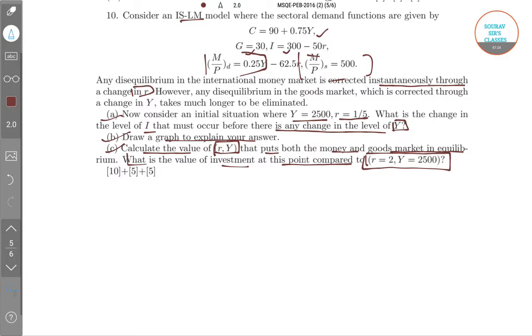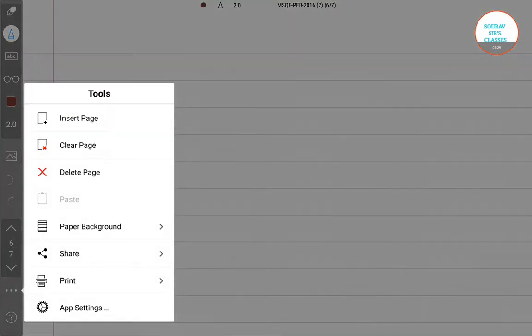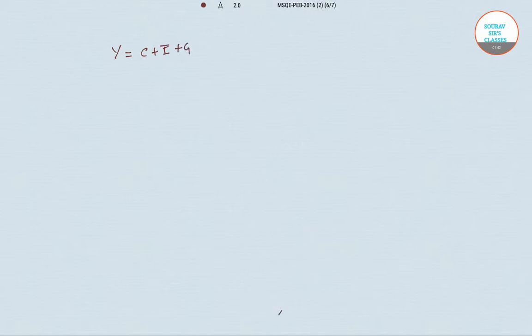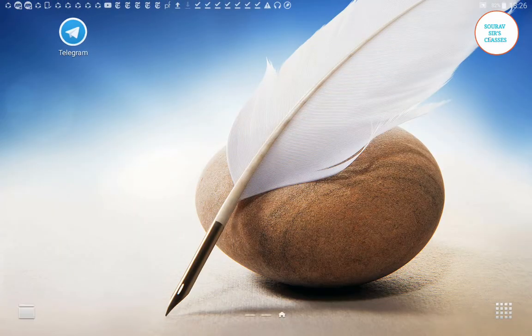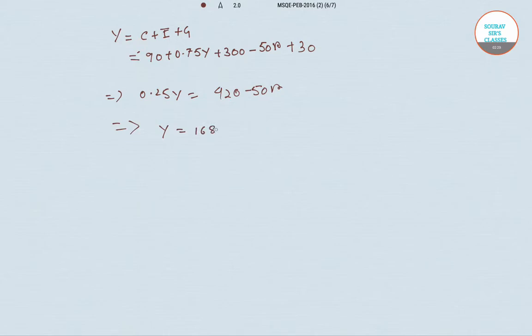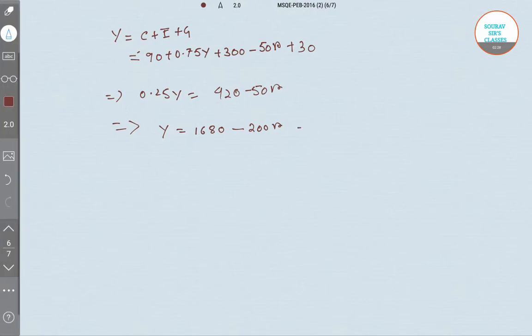First, we write down the IS equation. The IS equation is Y equals C plus I plus G, where C is 90 plus 0.75Y, I is 300 minus 50r, and G is 30. Simplifying, we get 0.25Y equals 420 minus 50r, so the IS equation gives us Y equals 1680 minus 200r. This is the equilibrium condition in the goods market.